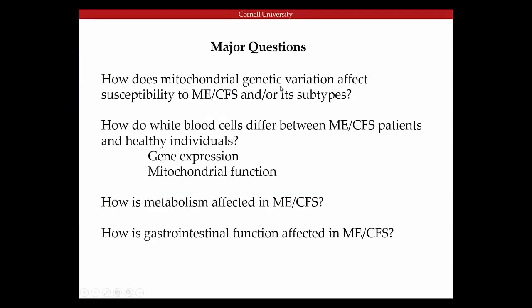I'm going to address four major questions, and my talk is really divided into four sections. Each of these sections is somewhat independent, so that if you get bored in one section, you can listen to the subsequent ones without having to know what I said in the previous ones. I'm first going to talk about mitochondrial genetic variation. Then I want to talk about white blood cells and their possible differences between patients and healthy individuals. I will also discuss how metabolism might be affected in ME-CFS, and then discuss gastrointestinal function in ME-CFS.